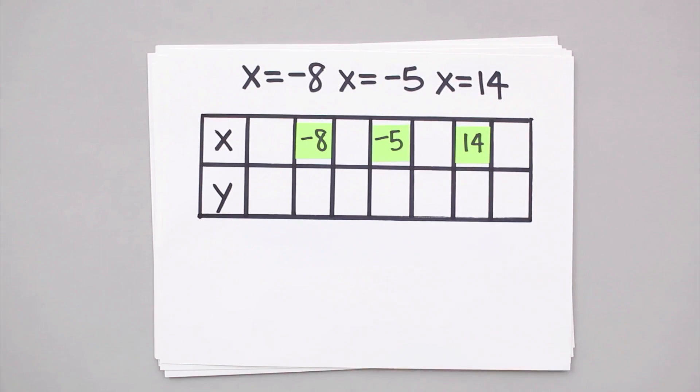For example, let's say you have a function, and you just found that there are critical points at x equals negative 8, negative 5, and positive 14. In this case, determining whether each of these critical points is a maximum or a minimum is going to take a little bit of extra work.